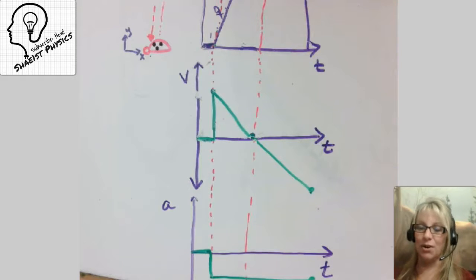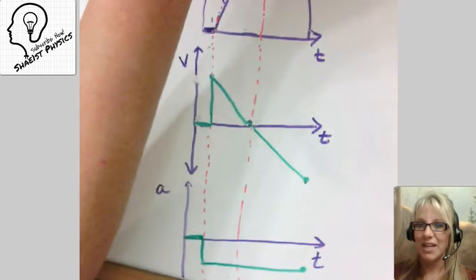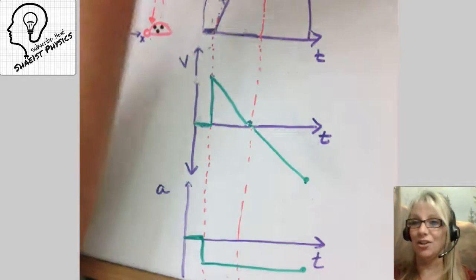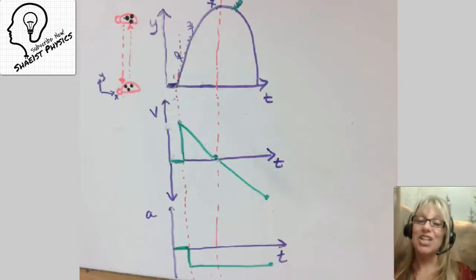This is what our acceleration curve would look like. So, there you go. We went from a position curve to a velocity curve to an acceleration curve. Don't ever make it more complicated than that. Post your questions below and subscribe today. Make it a good one.